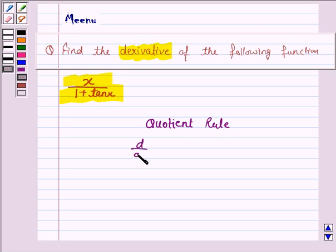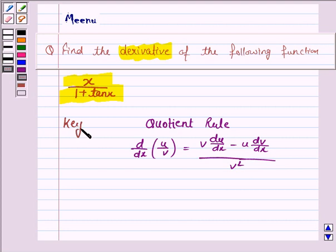It says, d by dx of u by v is given by v into du by dx minus u into dv by dx upon v square. So this knowledge will work as key idea.